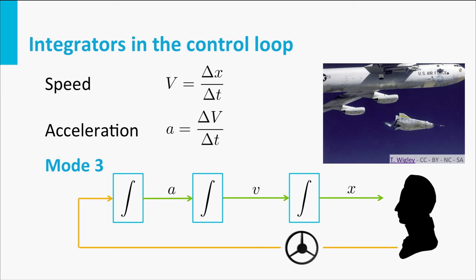The human mind cannot process three integrators in a control loop without extreme training — somewhere around 2 or 3 is the limit. If you can control Mode 3 in the video game, it's partly because you can see the speed and not just the displacement. Three integrators is very hard, and test pilots were put in these aircraft to control them. This longitudinal stability — specifically pitch angle — is what you experience in the game.